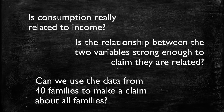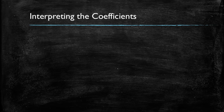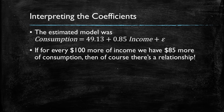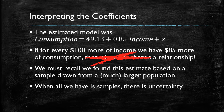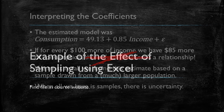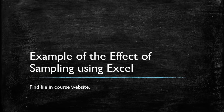This is what we're going to be discussing today. Let's recall how we interpreted the coefficients: for every $100 in income, we had $85 more of consumption. But we must recall that we were working with a sample drawn from a much larger population. When working with samples, we're not observing the entire population — we're making assumptions about the rest of the population we do not see, and this induces uncertainty. To clarify the role of this uncertainty, we're going to show an example using Excel to simulate sampling.